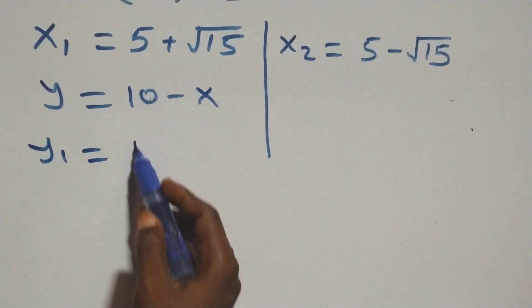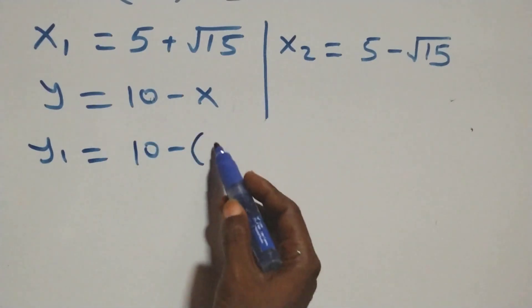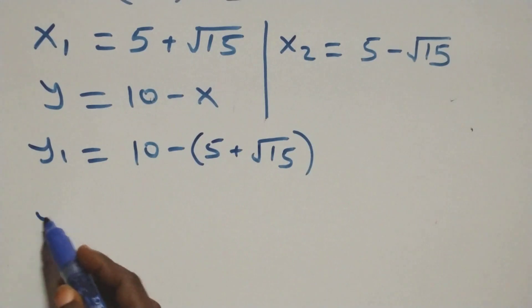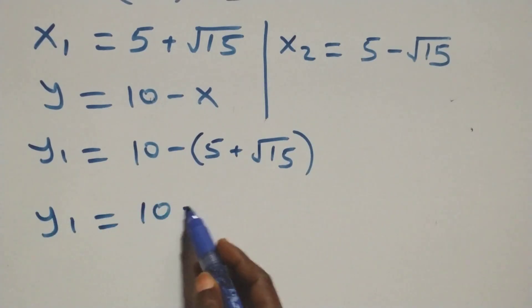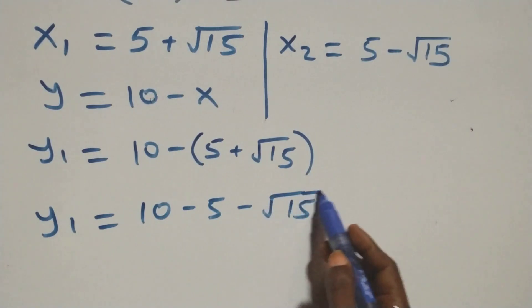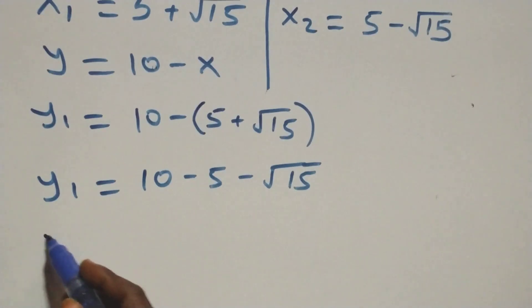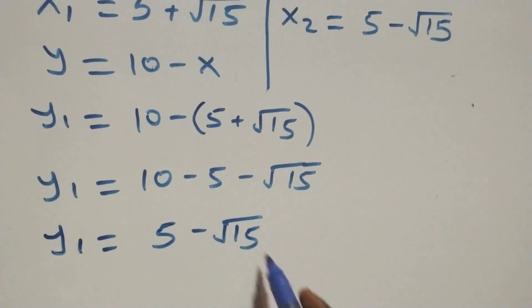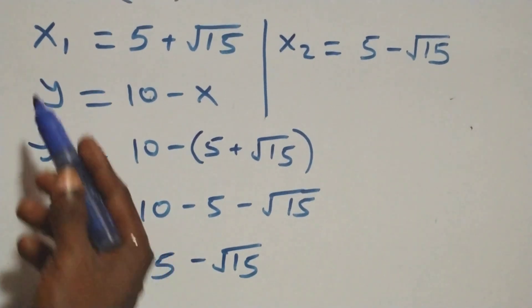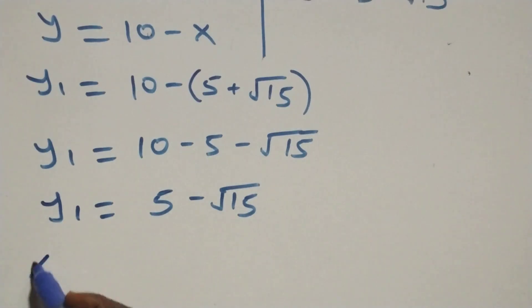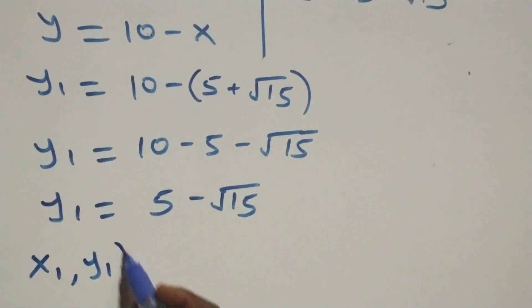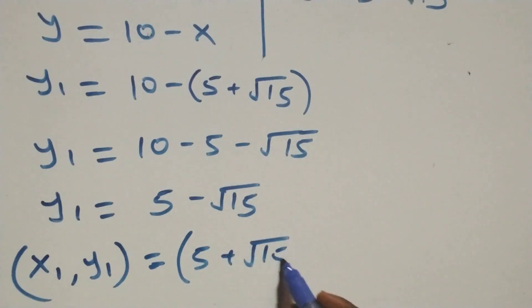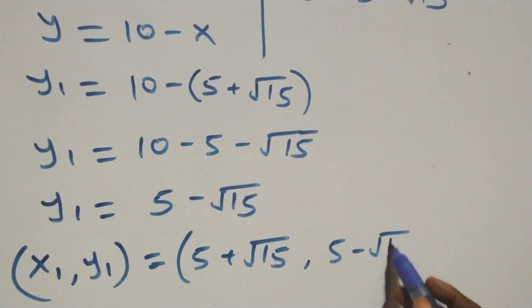y one equals to ten minus x one, which is ten minus (five plus root fifteen). Opening the bracket, y one equals to ten minus five minus root fifteen, which gives y one equals to five minus root fifteen. So the first solution is (x one, y one) equals to (five plus root fifteen, five minus root fifteen).